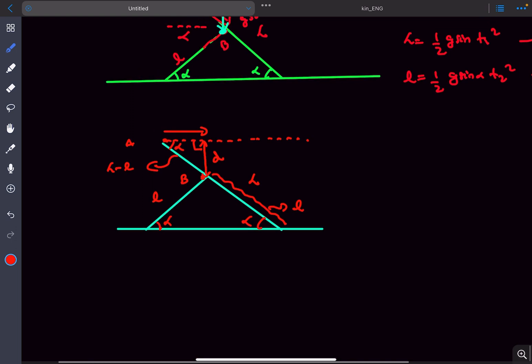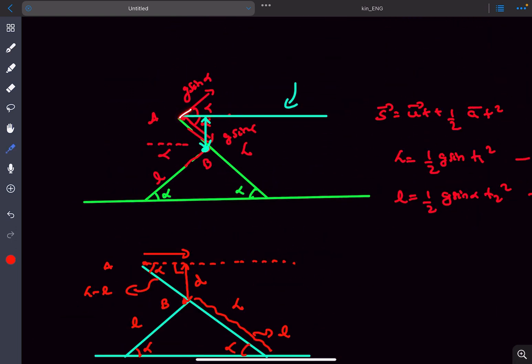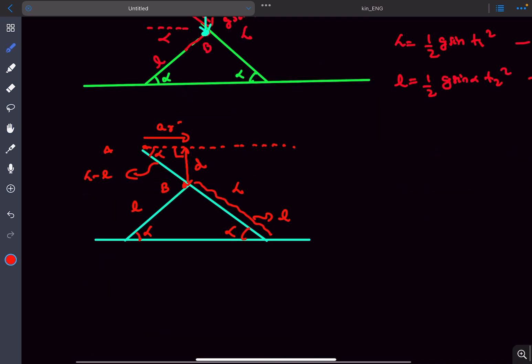What is the net acceleration here? Let's find the relative acceleration of A. The component of g sin alpha along this line is g sin alpha cos alpha, and similarly the component of this g sin alpha will also be the same. The net acceleration will be 2g sin alpha cos alpha.